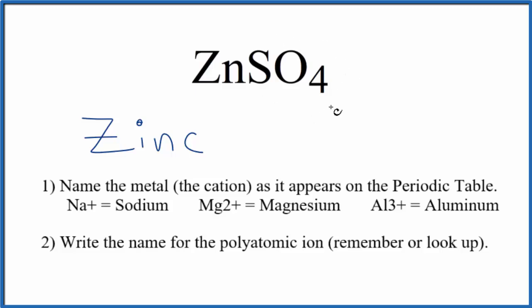Then we'll write the name for the polyatomic ion. This is SO4, the sulfate ion. Lowercase s. And that makes the name for ZnSO4, zinc sulfate.